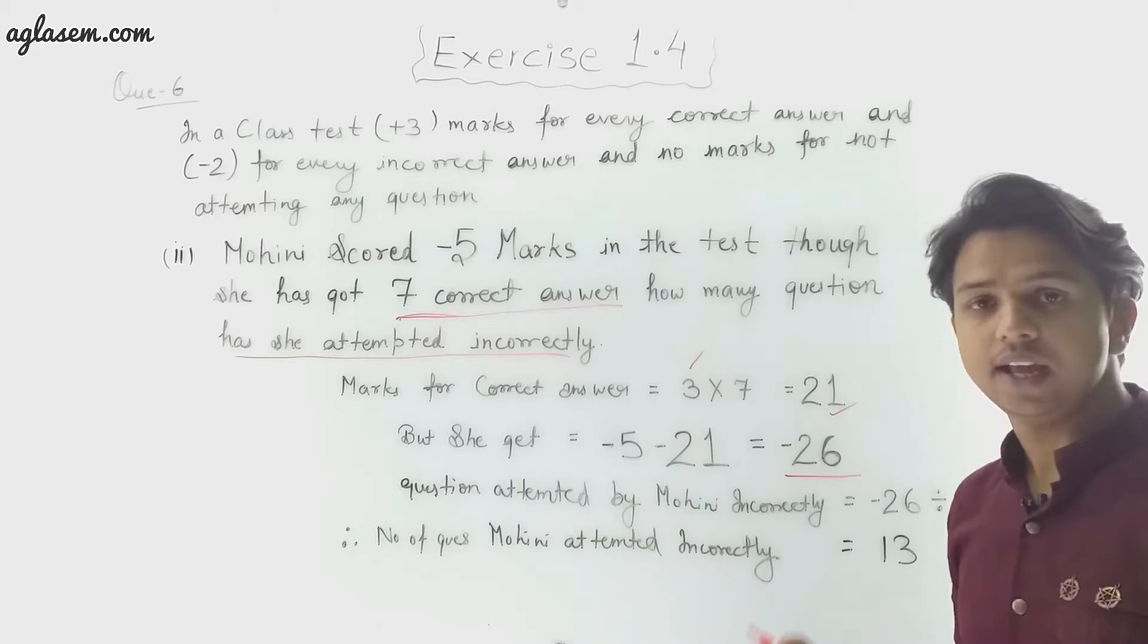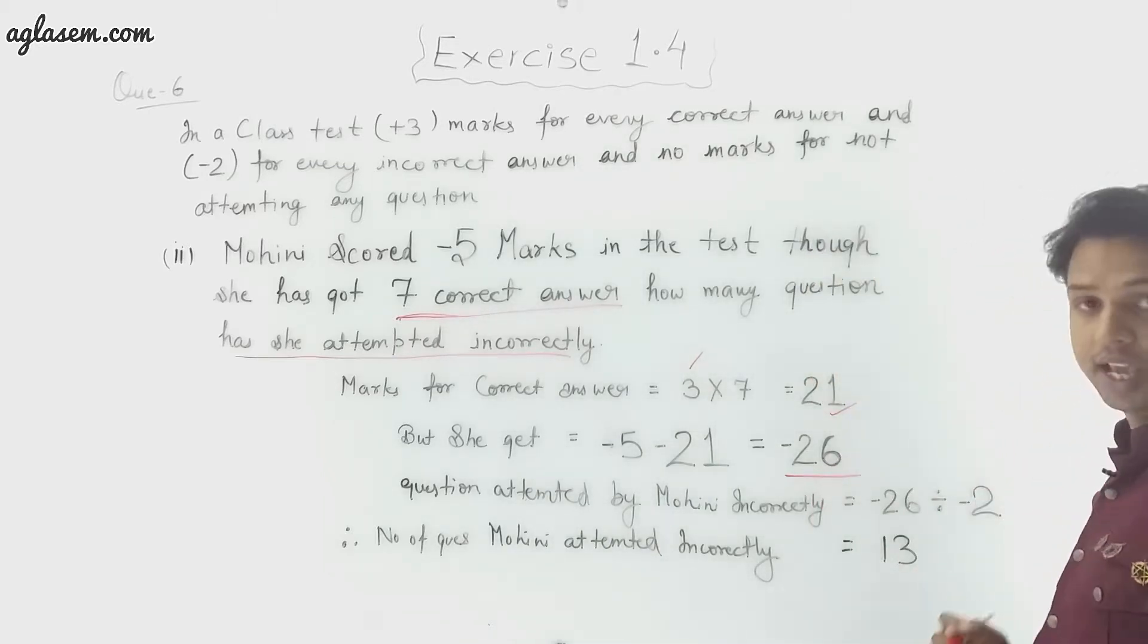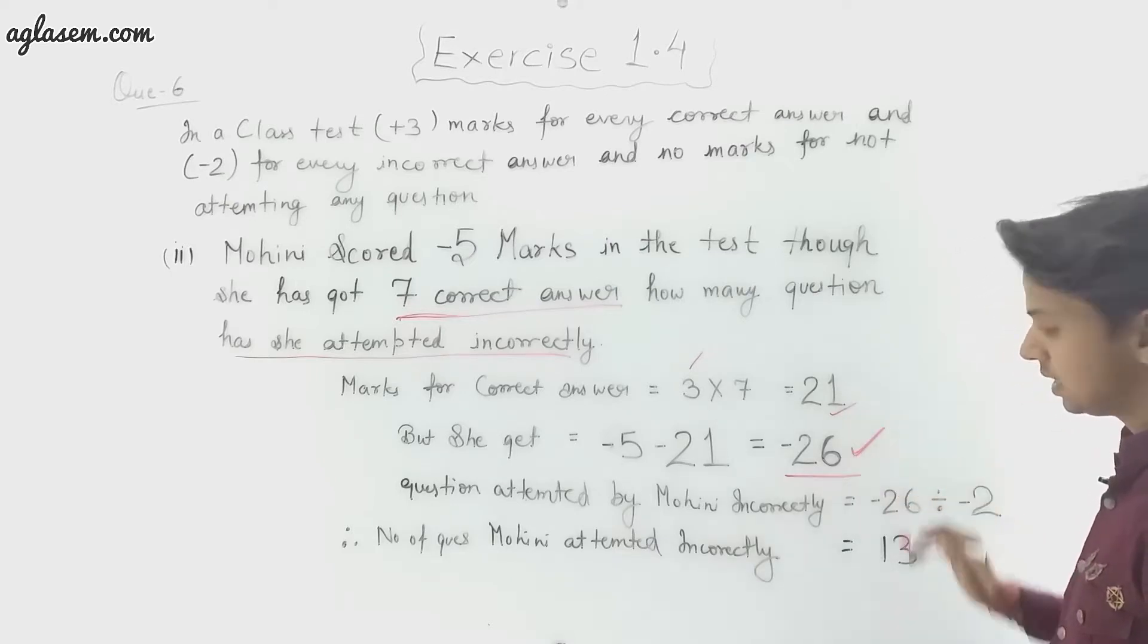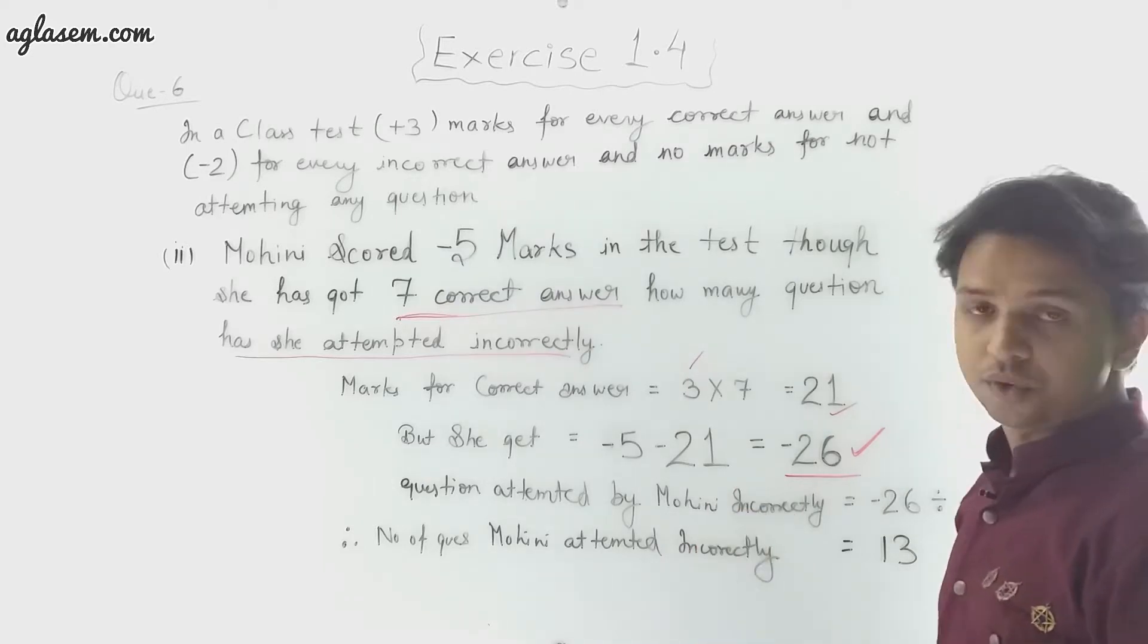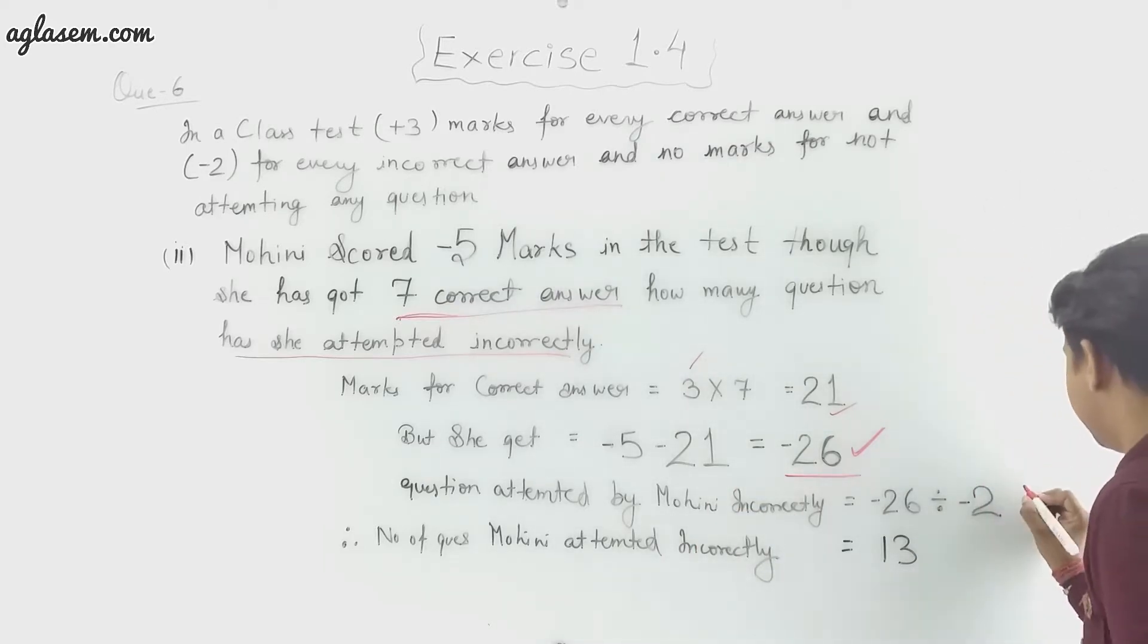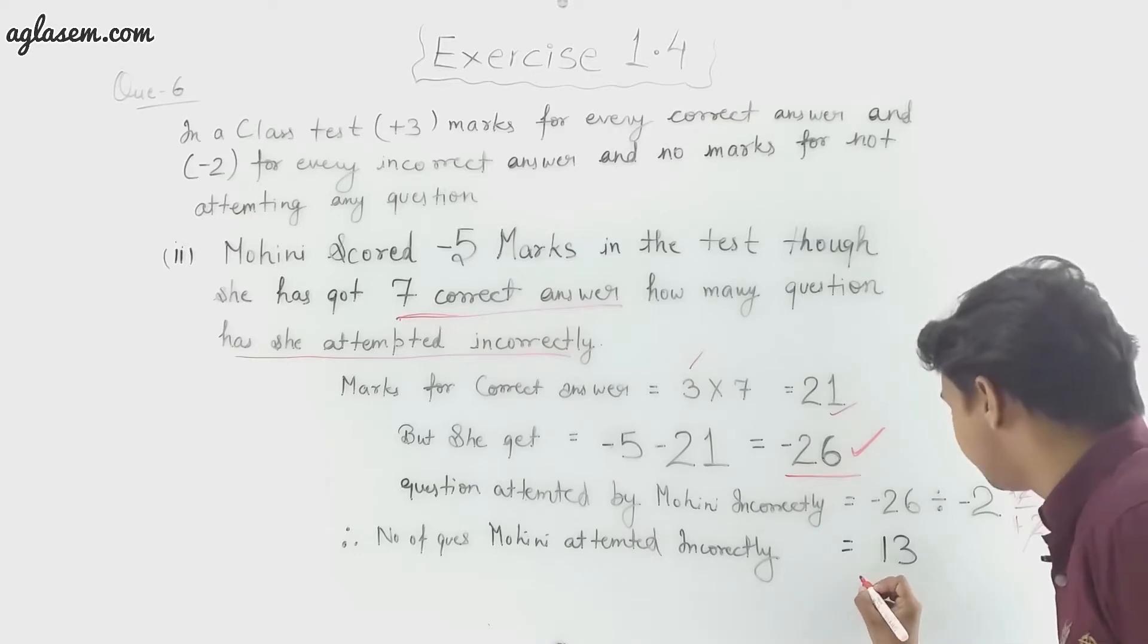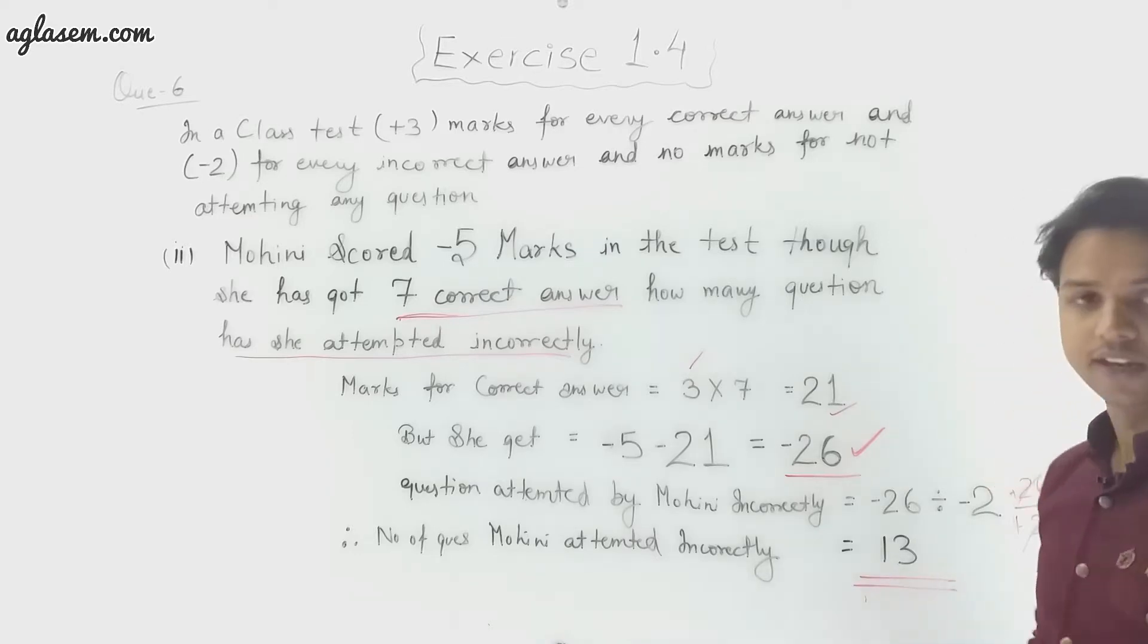Now we have to find number of questions she attempted incorrectly. Questions attempted by Mohini incorrectly equals -26 ÷ 2. Therefore, the number of questions Mohini attempted incorrectly will be 26 ÷ 2 in minus terms: 2 × 1 = 2, 2 × 13 = 26, and minus minus cancelled. So her answer will be 13. Mohini attempted 13 answers incorrectly.